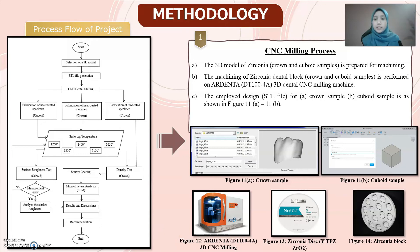Next is the methodology of the study. The process flow of the project is shown on the left. The first step is the CNC milling process. The 3D model of zirconia, comprising crown and cuboid samples, is prepared for machining. Machining of zirconia is performed using the Ardenta 3D Dental CNC milling machine, shown in Figure 12. The STL files for the crown sample and cuboid sample are shown in Figures 11a and 11b respectively. Figure 13 shows the zirconia disc and Figure 14 shows the zirconia block.